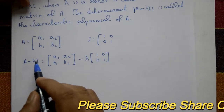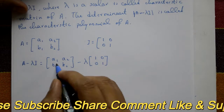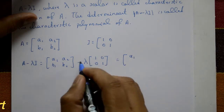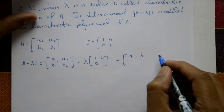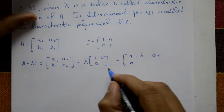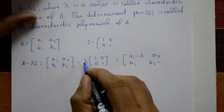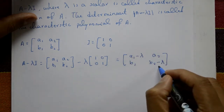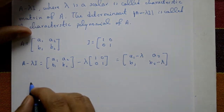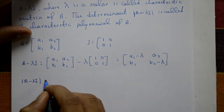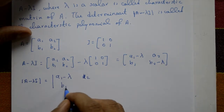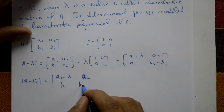So A minus λI is the characteristic matrix. Expanding this, the diagonal entries become (a1 - λ) and (b2 - λ), while the off-diagonal entries remain a2 and b1. That is, det(A - λI) equals the determinant of [a1 - λ, a2; b1, b2 - λ].